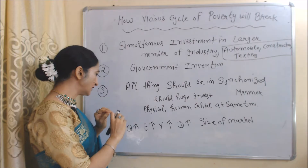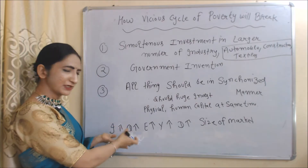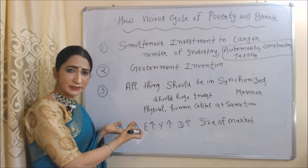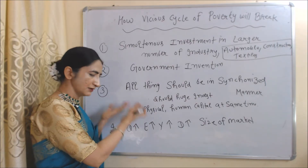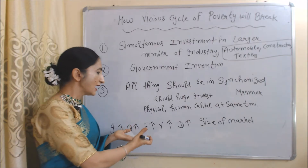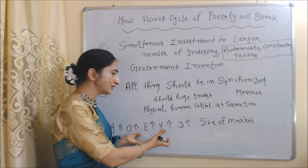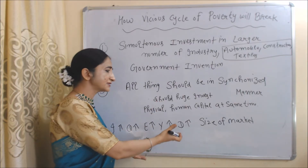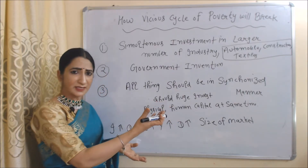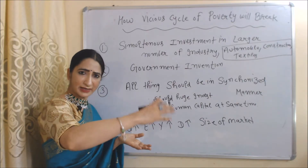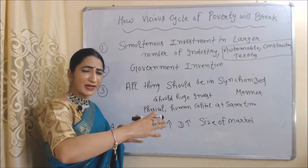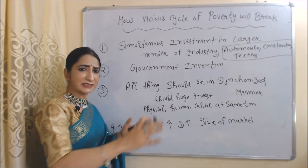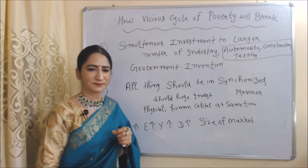More investment will lead to an increase in output. As output increases, employment will increase in the economy. As employment increases, income increases. Income increase leads to demand increase. Demand increase leads to an extension of the size of the market. And ultimately, all these things will lead to balanced growth.